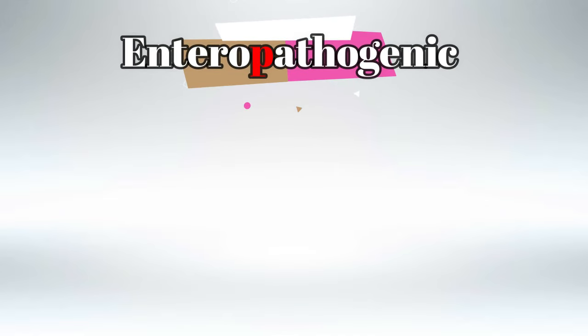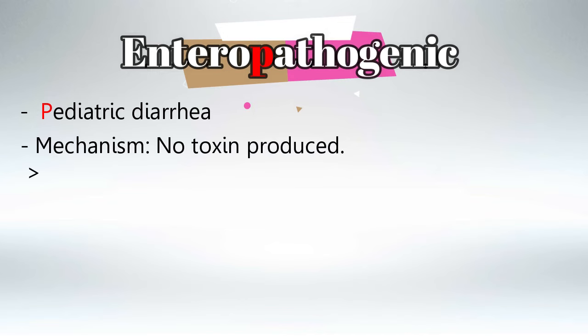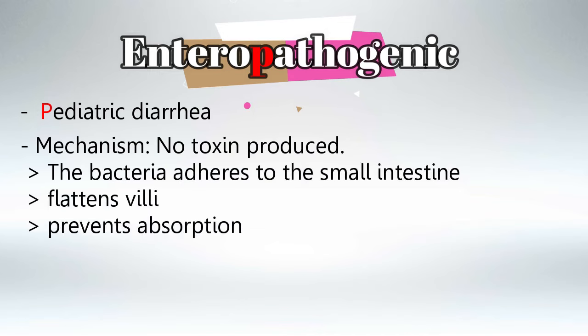The second type is called enteropathogenic E. coli and it mainly causes pediatric diarrhea. Just remember that pediatric starts with P and pathogenic starts with P as well. The mechanism is that the bacteria itself will adhere to the intestinal mucosa and cause flattening and death of the villi, preventing absorption and causing diarrhea. The action is mediated by the bacteria itself, not by a toxin.